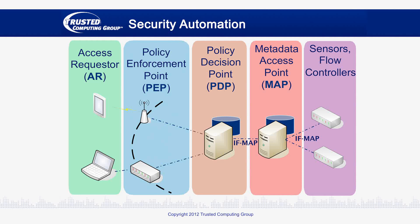For example, a policy decision point can share information about a user who's logged into the network and subscribe to any events pertaining to that user. If the user starts attacking other people, a network intrusion detection system can publish an event about the problem, and the policy decision point will be notified via the IFMAP protocol. Then, the policy decision point can tell the policy enforcement point to quarantine that user, or whatever is called for in your policy.